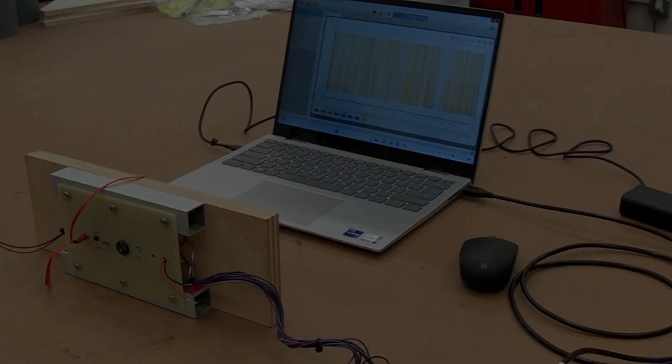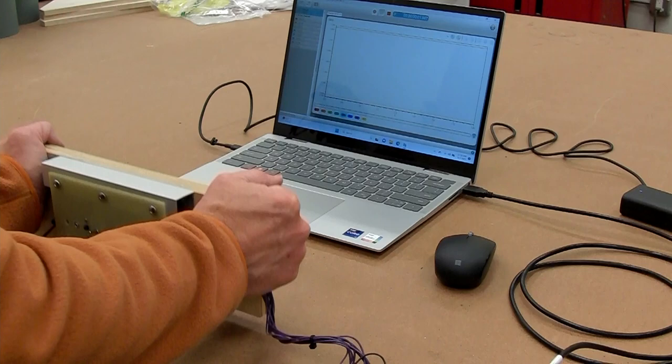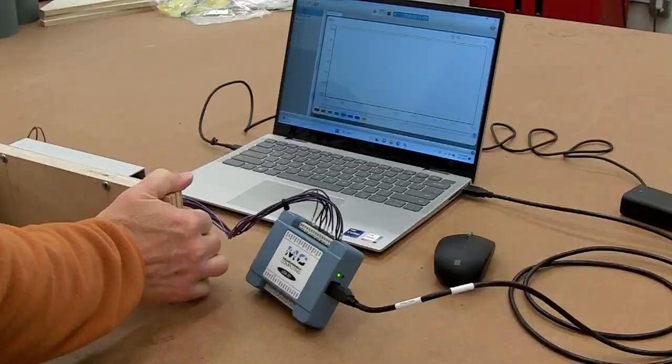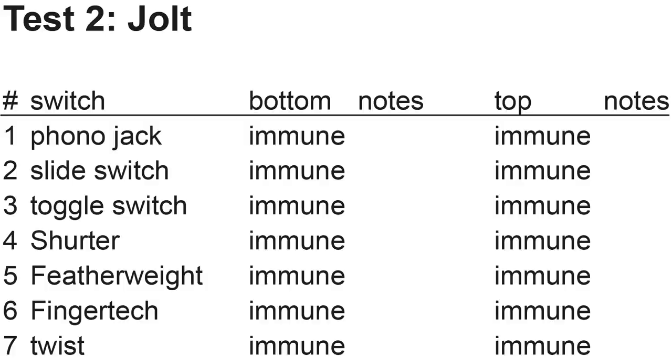The second test is to simulate the rocket hitting something, either a hard jolt taking off or a hard jolt landing. I banged it against the table on the bottom and the top. Nothing much to report here. All switches seemed immune despite my whacking it pretty hard both on the bottom and the top. This was actually the second surprise to me because people seem worried about jolts turning switches off and I couldn't reproduce that. If jolts can cause brownouts, they last less than a millisecond.